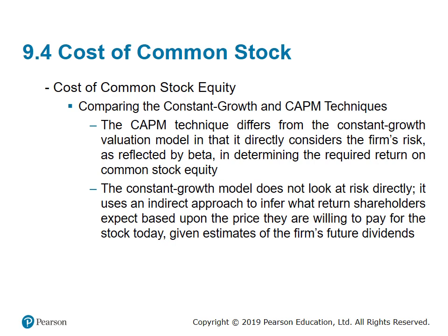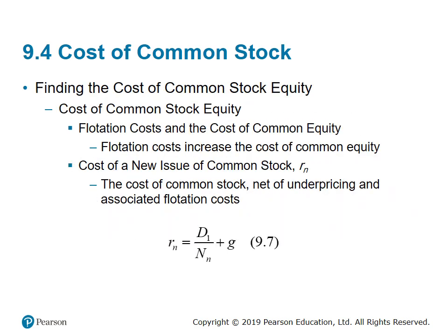Comparing the two techniques: the CAPM technique differs from the Constant Growth Model in that it directly considers the firm's risk as reflected by beta. The Constant Growth Model does not look at risk directly — it uses an indirect approach to infer the expected return based on the price investors are willing to pay today given estimates of future dividends. Risk is indirectly reflected in the price and future dividends, but is not explicitly given as an input assumption as in CAPM.